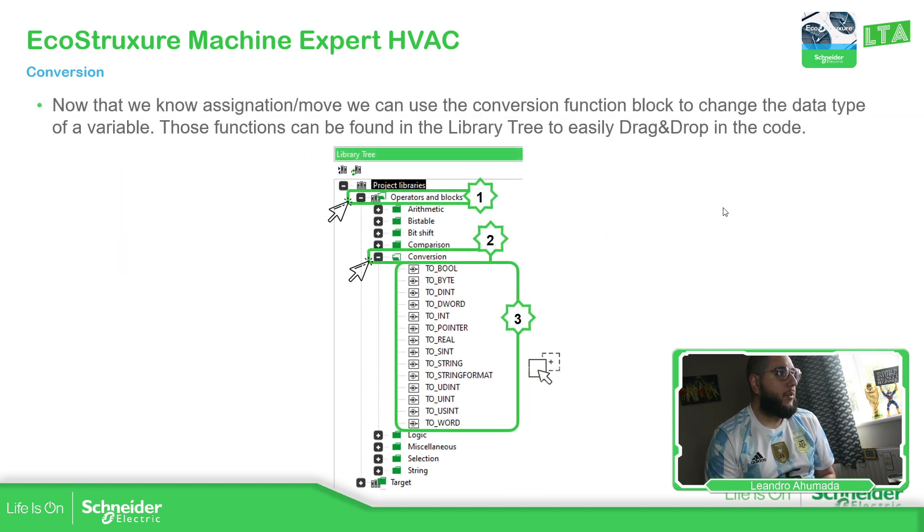So from ladder and FBD, we move the value from left to right because it's how the code is executed. In the structured text, we just need to use this icon, this syntax. And remember that the value here is the final destination. I'm moving the value from here to here. That's the important thing. Now that we know this, it's important to know these conversions that we have. So again, inside the operators and blocks, we have the folder conversion and inside we have different conversions. So the idea here is, it doesn't matter what you have, the original data type. You just need to know the final destination. There's going to be two, the value.